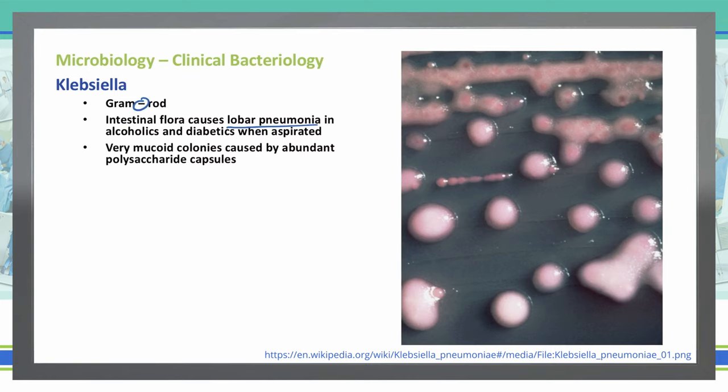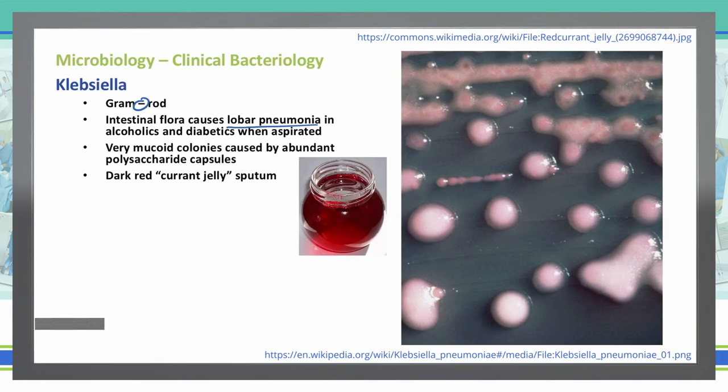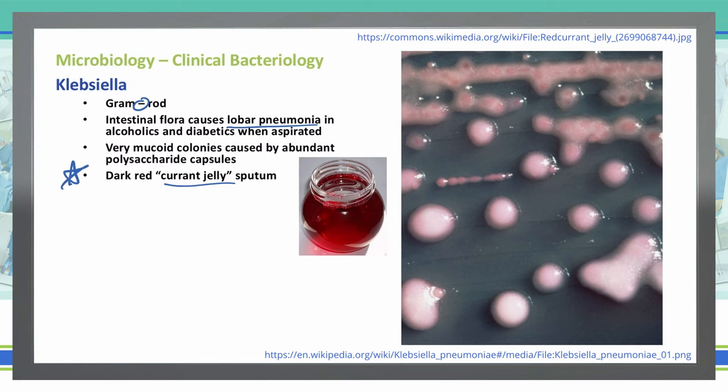Klebsiella is a very mucoid colony that we see with abundant polysaccharide capsules. One of the most common things you're going to see associated with Klebsiella is a dark red or currant jelly sputum. This is a good buzzword for Klebsiella because you only see currant jelly sputum associated with Klebsiella. It's that really dark red, almost bloody color to the sputum — but this is not blood in the sputum. This is just the Klebsiella causing the sputum to turn that dark red color.